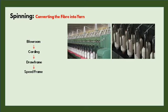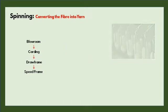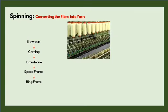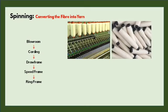The next process is the ring frame. In this process, we will get our yarn. The roving bobbins are taken out and fed to the ring frame machine, as you can see in the photo. The roving is then drafted according to the count that is required, then it is twisted to hold the consecutive fibers together, and then wound on packages known as ring bobbins.